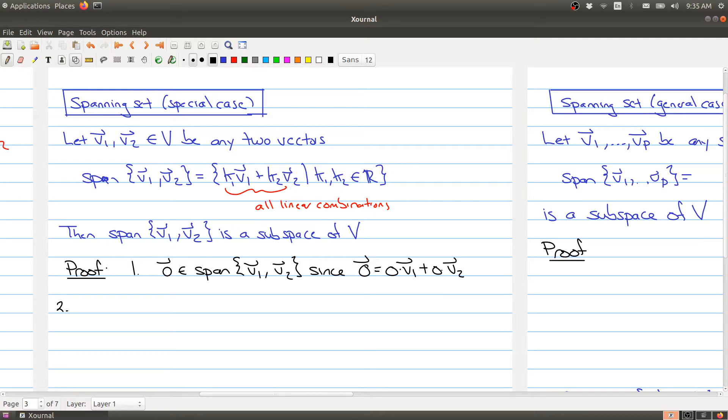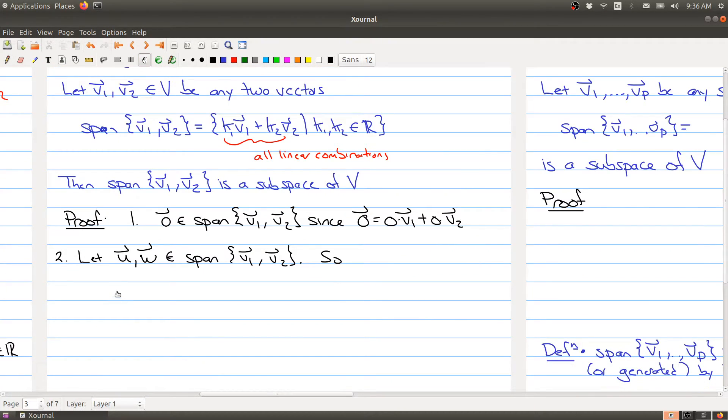Now let's show that the span is closed under the vector space operation of addition. So we take two vectors, we don't know what they are, but let's call them U and W inside of the span of V1 and V2.